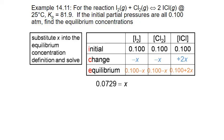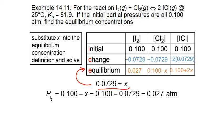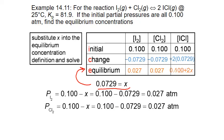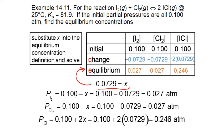We substitute X into our equilibrium formulas. The equilibrium partial pressure of iodine is 0.100 minus 0.0729, giving 0.027 atmospheres. Chlorine has the same formula and the same result. For our product iodine monochloride, we add 2 times X to 0.100, giving a final partial pressure of 0.246 atmospheres.